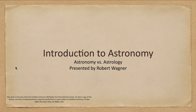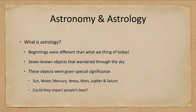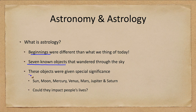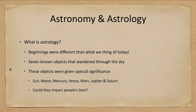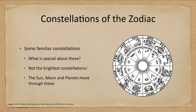Astrology's beginnings were quite different than what we think of today. There were seven special objects that wandered through the sky and were given special significance: our Sun, our Moon, and the planets known at the time — Mercury, Venus, Mars, Jupiter, and Saturn. These were special because they wandered through the heavens whereas all the stars remained fixed relative to one another. Could these objects, which changed their positions, have an impact on people's lives? That is the basis of astrology.